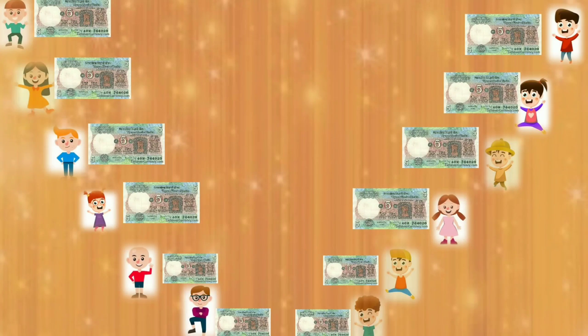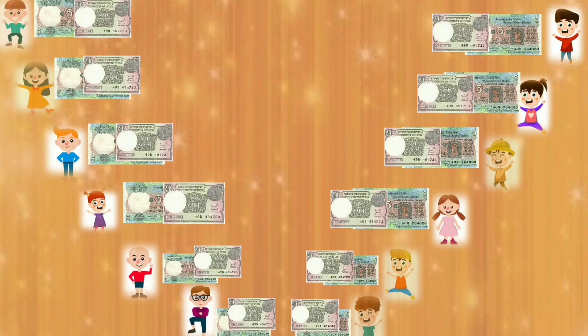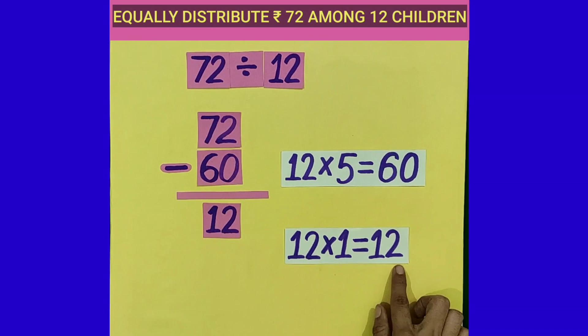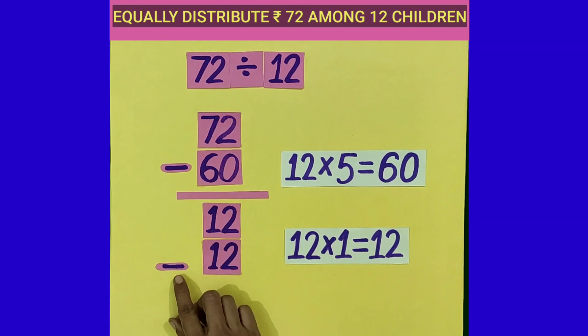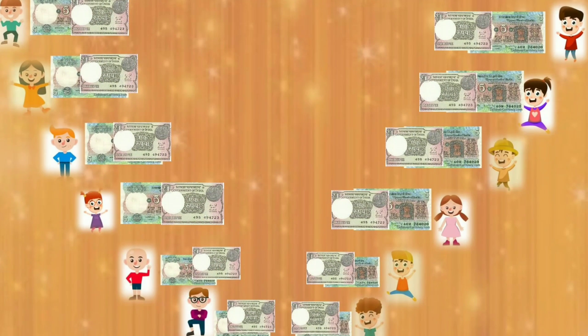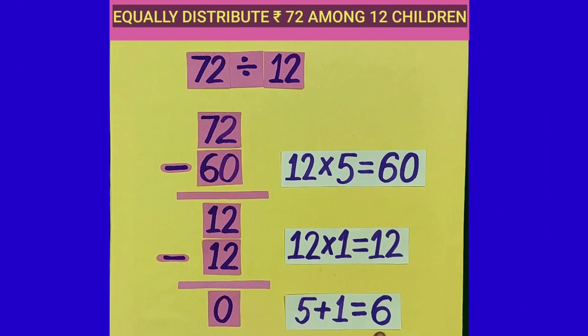But students, we can't equally distribute these notes among 12 children. So what we can do here is that in place of two 5-rupee notes, we can take 10 notes of 1 rupee. Now you can see we have 12 notes of 1 rupee. And now we can give a 1-rupee note to each one of them. 12 times 1 is equal to 12, so we have distributed the remaining 12 rupees. After subtracting 12 from 12, we get 0. First they received 5 rupees and then 1 rupee — that means 6 rupees in total. So each member has received 6 rupees equally.